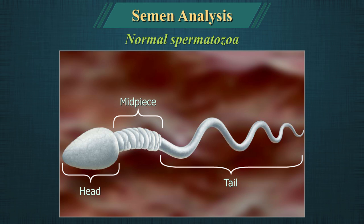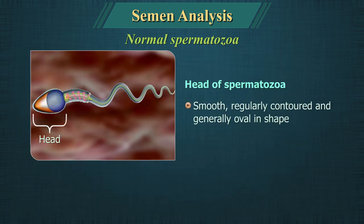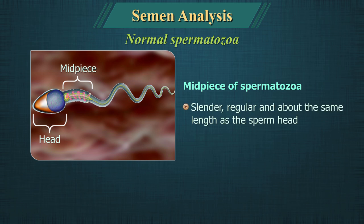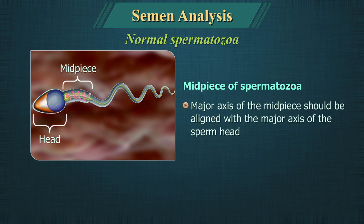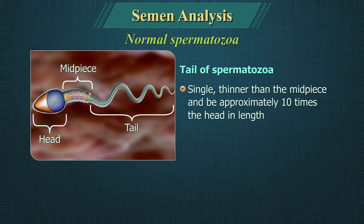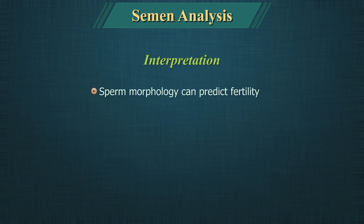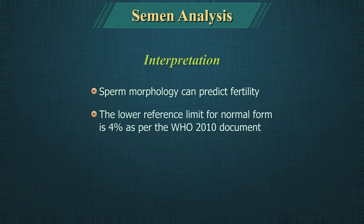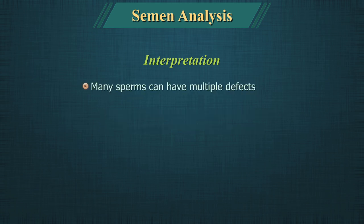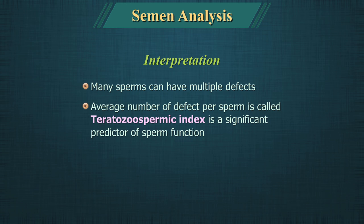For a spermatozoon to be considered normal, all parts must be normal; all borderline forms should be considered abnormal. The head should be smooth, regularly contoured and generally oval in shape. The midpiece should be slender, regular and about the same length as the sperm head, with its major axis aligned with the major axis of the sperm head. The tail should be single, thinner than the midpiece and approximately 10 times the head in length. The stained slide should be retained for 1 week. The lower reference limit for normal forms is 4% as per the WHO 2010 document. The average number of defects per sperm is called the teratozoospermic index, which is a significant predictor of sperm function.